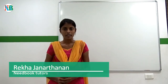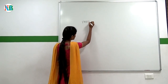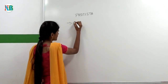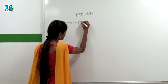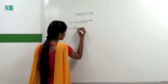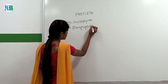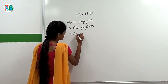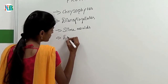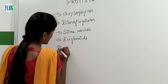Now we are going to see about Kingdom Protista. This kingdom includes chrysophytes, dinoflagellates, slime molds, euglenoids, and protozoans.